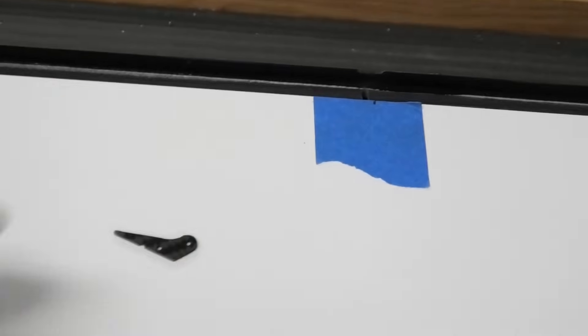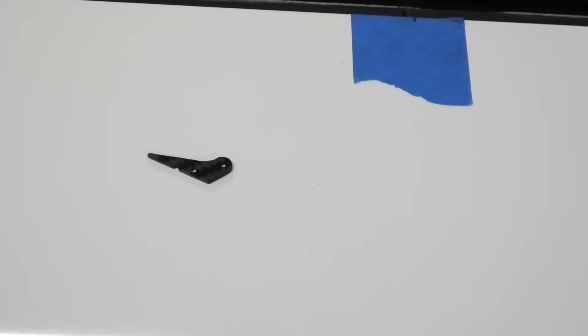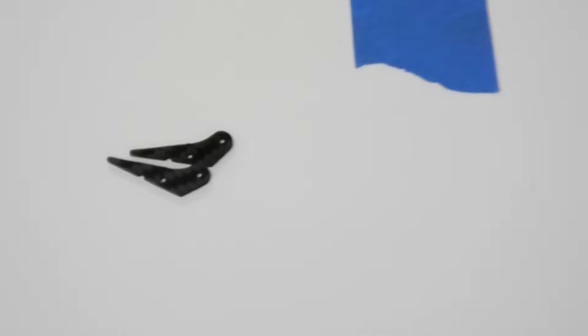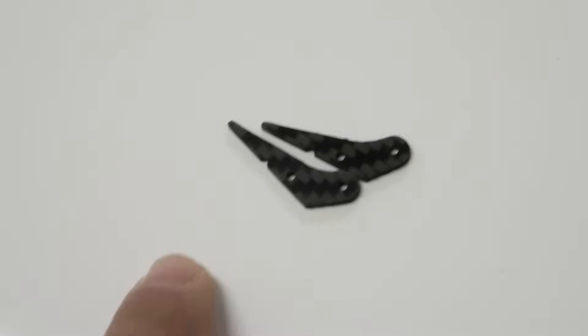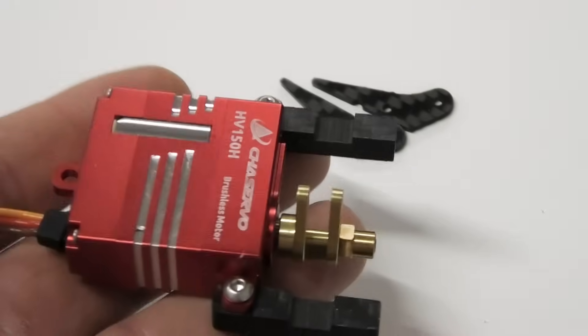This is going to be really tricky because we have to do two identical installations of two servos. These are the horns I'm going to be using right here and I've started prepping the servos a little bit.